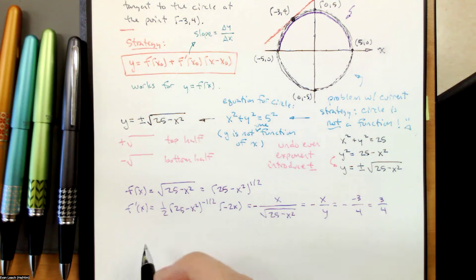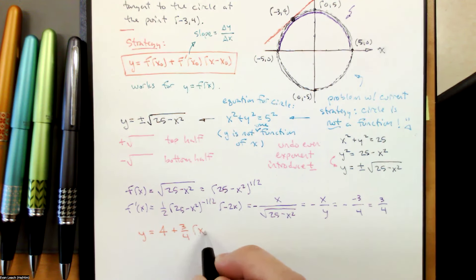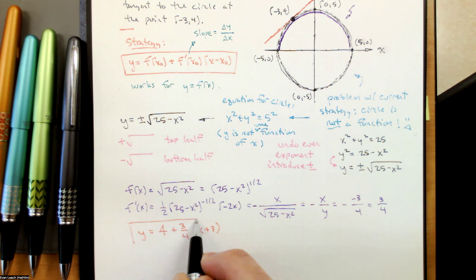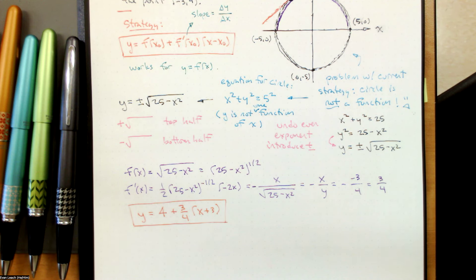Now we can drop this into the equation of our line. Y equals y-naught, which is 4, plus 3 fourths times x minus x-naught, which is negative 3. The point is that we had to get a function for our strategy to work — specifically, we had to get y as a function of x to fit with the slope we normally write as delta y over delta x.